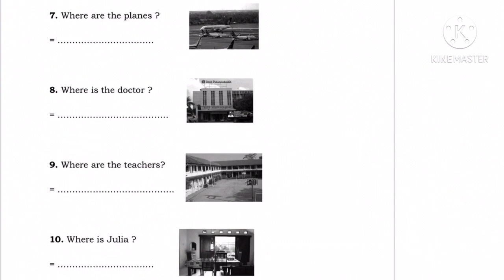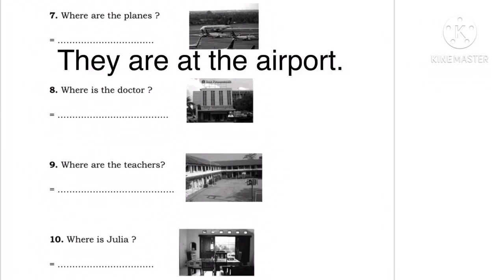Number seven. Where are the planes? Di mana pesawat-pesawatnya? The planes menggunakan huruf S di akhir kata, jadi kita tahu kalau ini adalah benda lebih dari satu atau plural. Maka, kalau dia plural, kita bisa ganti dengan subjek they. Setelah subjek they, kita meletakkan to be are. So, the answer is they are at the airport — mereka ada di bandara.